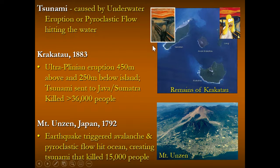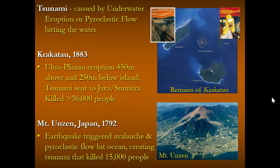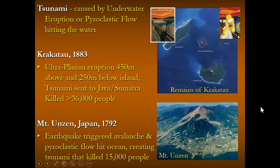You may have seen the painting 'The Scream' by Edvard Munch — it's depicting the aftermath of this 1883 event. Then, Mount Unzen in Japan in 1792 had an earthquake that triggered an avalanche, creating a pyroclastic flow that hit the ocean and caused a tsunami killing 15,000 people. Mount Unzen sits in an extremely populated area and faces lahar danger, pyroclastic flow danger, and tsunami danger — quite a dangerous place to live.